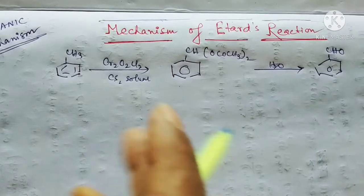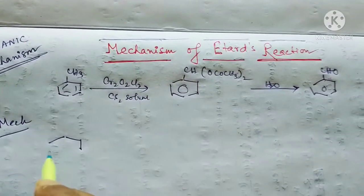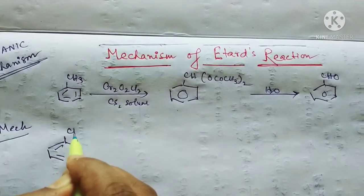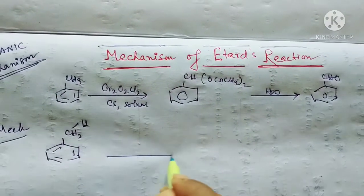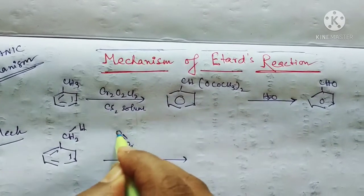See it very carefully, students. First, the toluene - this is our toluene, you can see - in presence of chromyl chloride, which is our chromyl chloride...